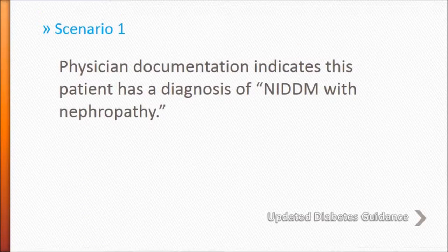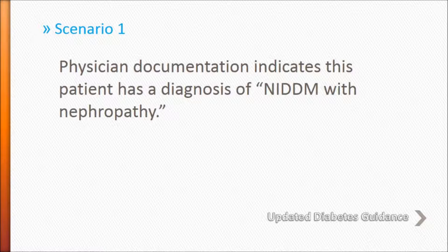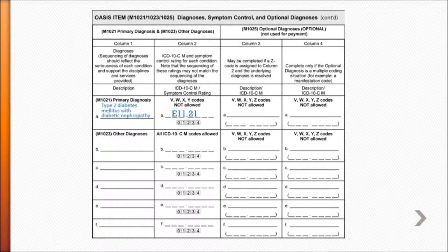In our first scenario, the physician documentation indicates this patient has a diagnosis of non-insulin-dependent diabetes mellitus with nephropathy. How would you code it? This is how I've coded it: M1021A, type 2 diabetes mellitus with diabetic nephropathy, E11.21.